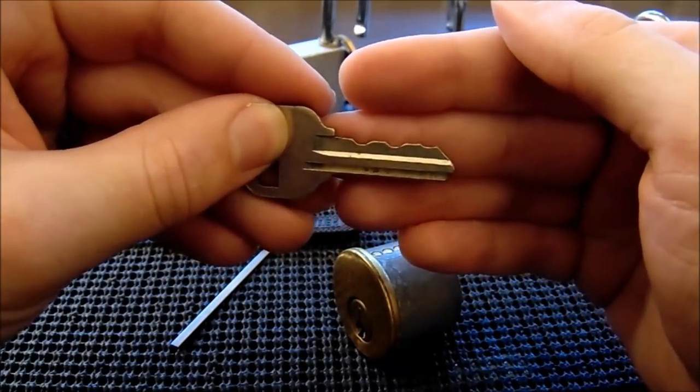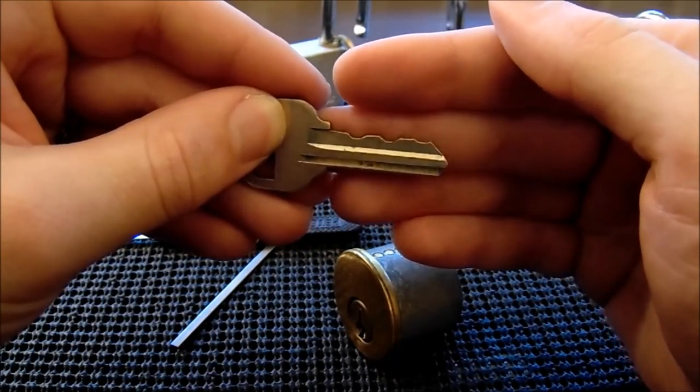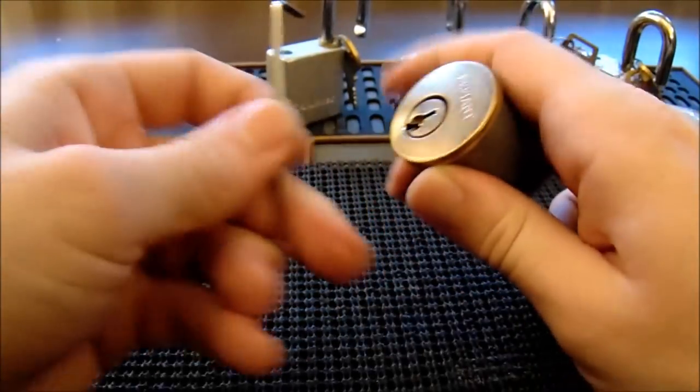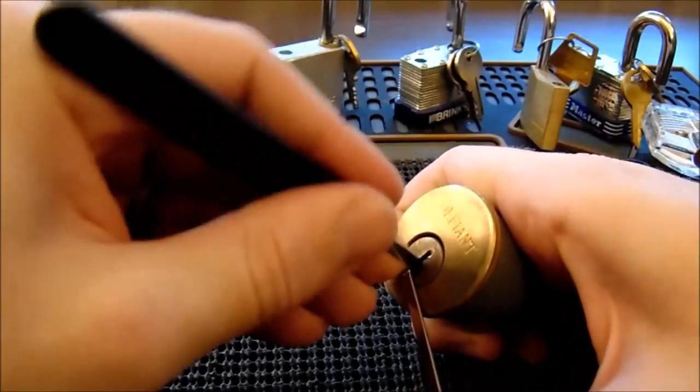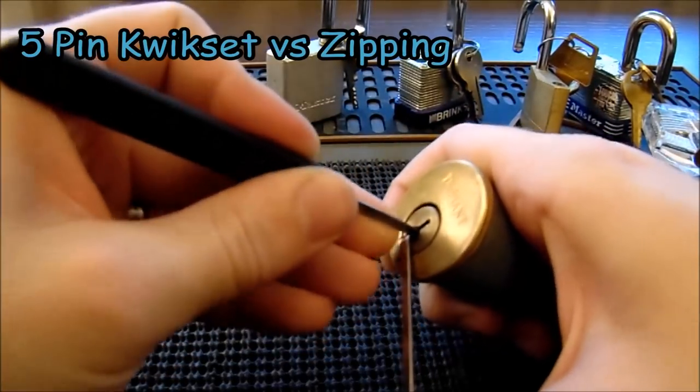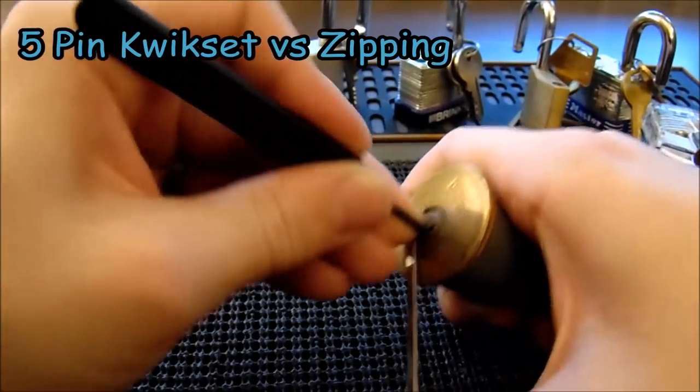When you do do a lot of variation in the bitting it can make the process a lot more difficult, and oftentimes you may want to zip to start it off and then single pin pick or rake the rest of the way to get it open. But we'll see what it takes. This is a five pin lock with all standard pins. I'll put the hook in the back here. One, two, three.